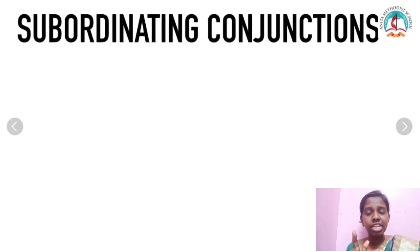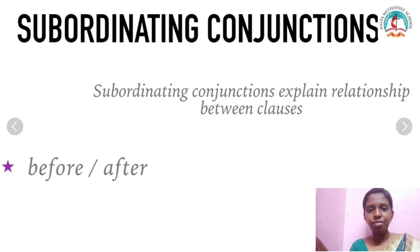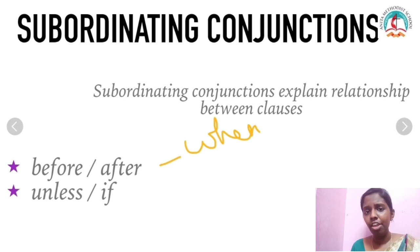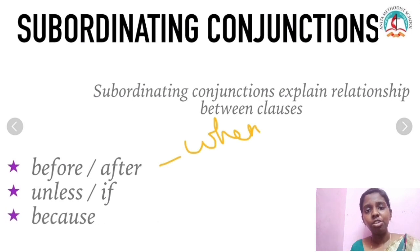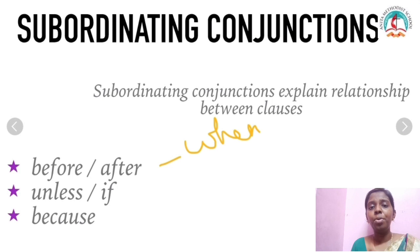What are subordinating conjunctions? Subordinating conjunctions explain the relationship between clauses. Like 'before' or 'after' — we use these to ask when the incident happened. Then we have 'unless' and 'if' — when we use these words, it is for a condition. For a condition clause, we use 'unless' and 'if'. And then 'because' — because says why the incident happened. For example: 'I was late because I went to the park' or 'I was late because I was stuck in traffic.'